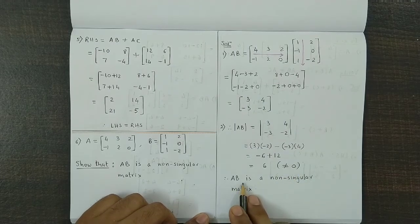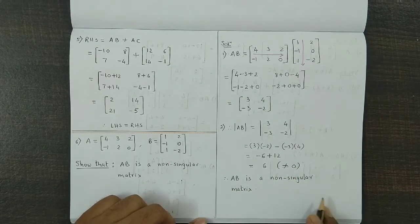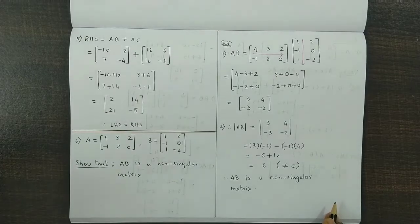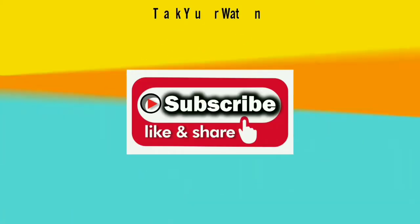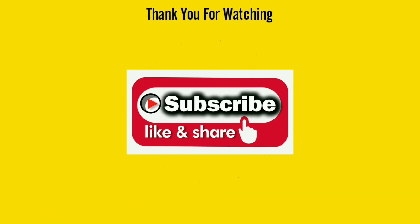Therefore, we could say AB is a non-singular matrix. Like it, share it, and subscribe to our channel for more such interesting videos. Thank you.